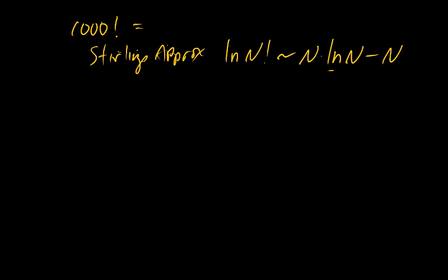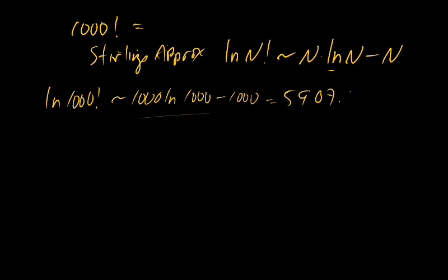So if I wanted to do a thousand factorial, I wonder what that number is. The first thing I do is look at the natural log of a thousand factorial. That's going to be approximately equal to a thousand log a thousand minus a thousand. And that can be done on the calculator very easily. And that's 5907.75.